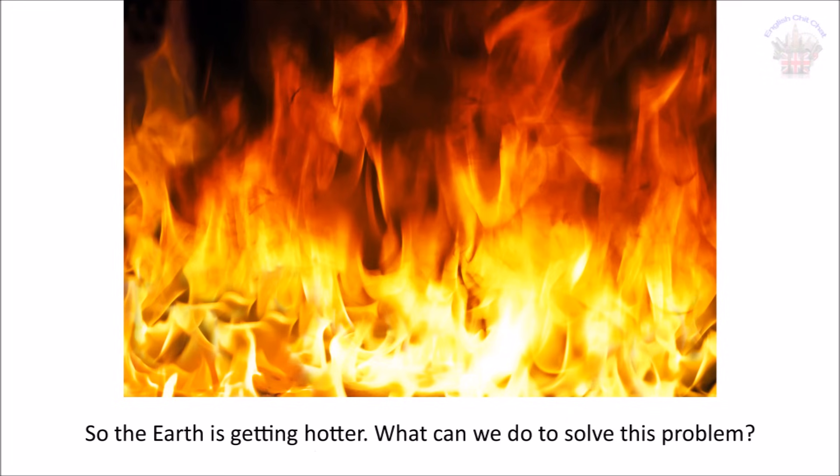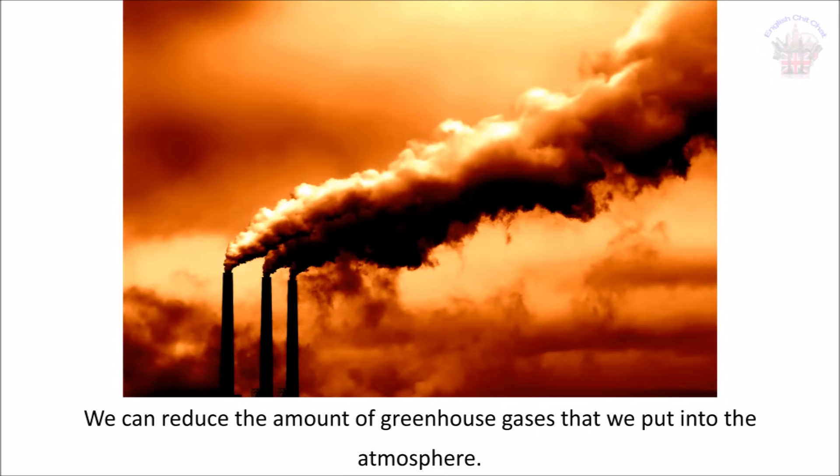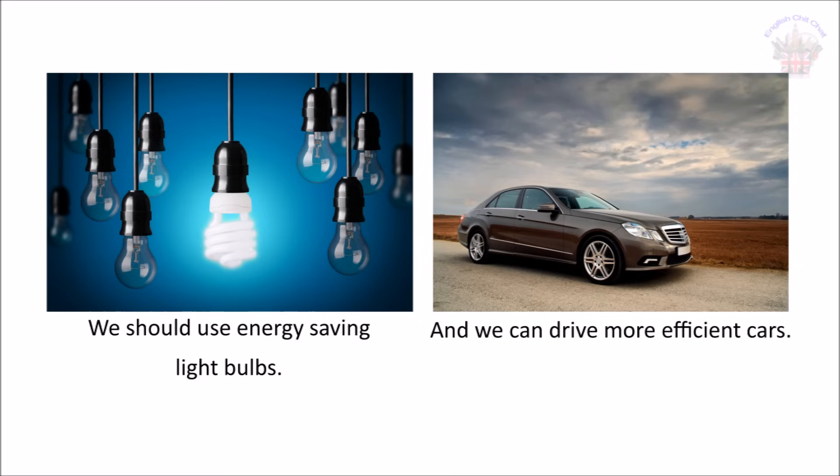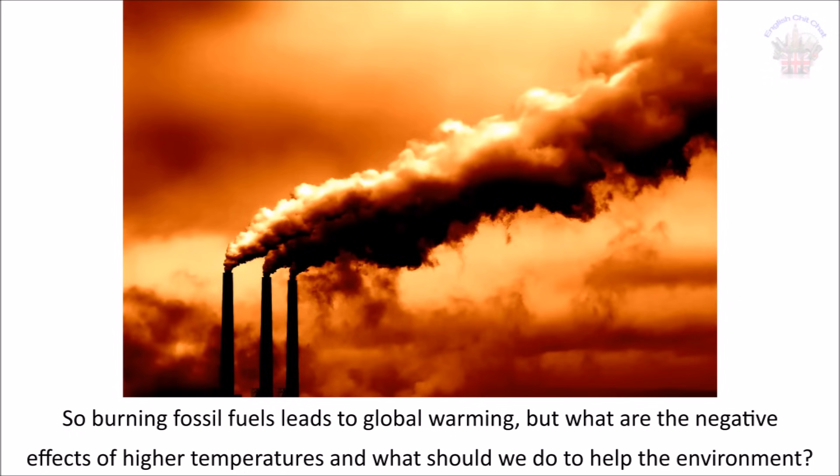So the earth is getting hotter. What can we do to solve this problem? We can reduce the amount of greenhouse gases that we put into the atmosphere. There are many things we can do to help. We should use energy saving light bulbs, and we can drive more efficient cars. So burning fossil fuels leads to global warming.